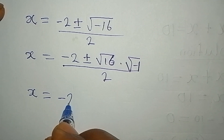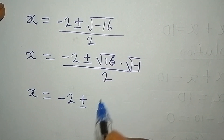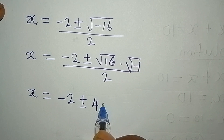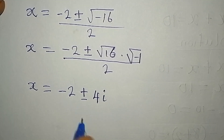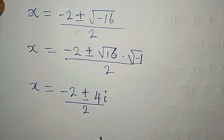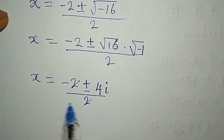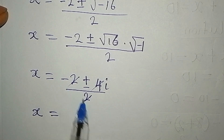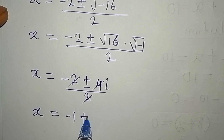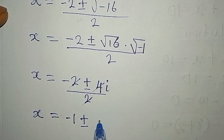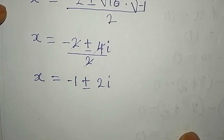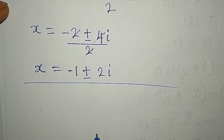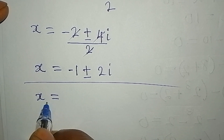The square root of 16 is 4, and the square root of negative 1 is imaginary, so we write i. The whole expression is divided by 2. Since 2 divides into both the negative 2 and the 4, x equals negative 2 over 2 which is negative 1, plus or minus 4 over 2 which is 2, times i.